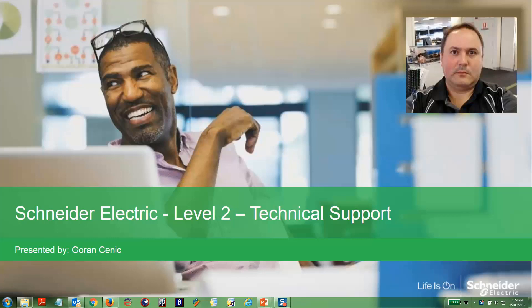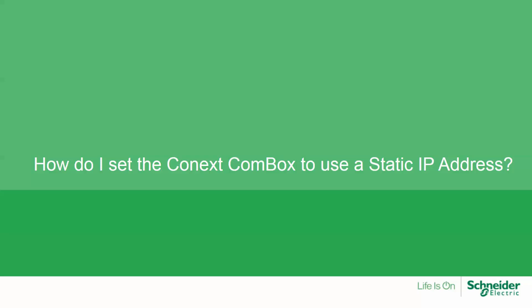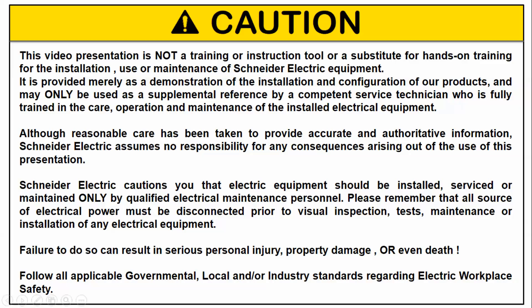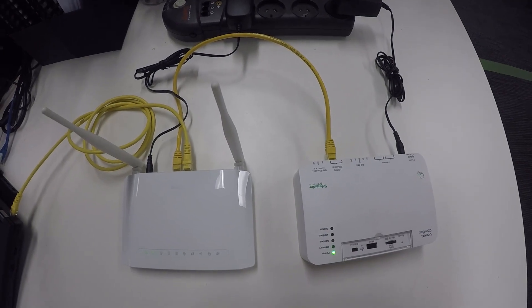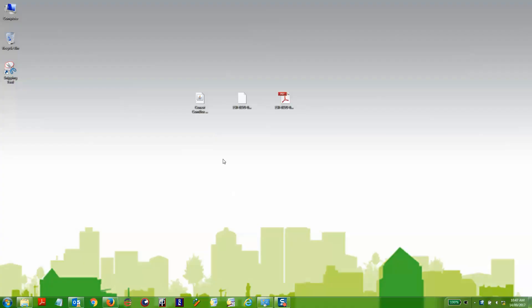Hi, my name is Goran. I'm from the Schneider Electric Level 2 technical support team. In this video I will be explaining how you can set the Connex COMBOX to using a static IP address. It's important that you already have your DHCP enabled modem router set to allow the auto assigned range to be reduced, so you do have a range where you can set your static IP. The equipment required is a modem router and your Connex COMBOX.